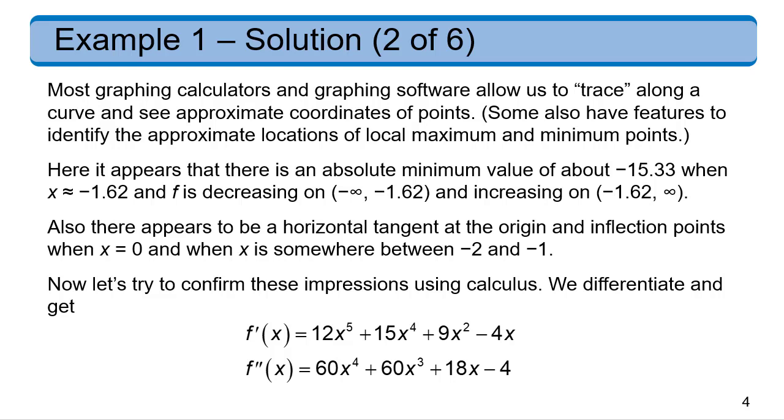And that's our y value. And x is equal to about negative 1.62. And we can also see that f is decreasing on the interval from negative infinity to that negative 1.62. And then it starts to increase and just blow up at that point. There also appears to be a horizontal tangent at the origin and some sort of inflection point somewhere between negative 2 and negative 1.